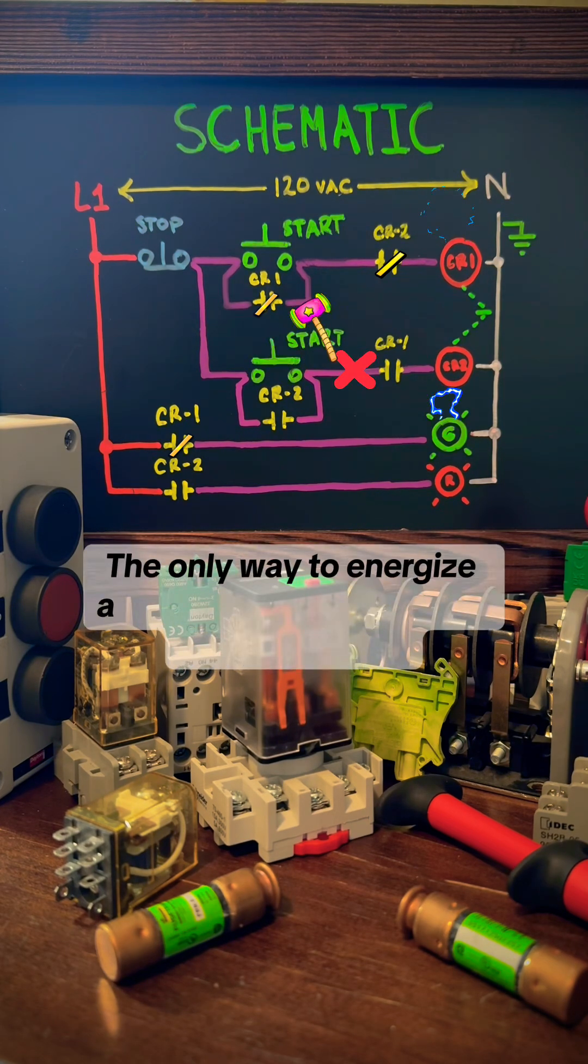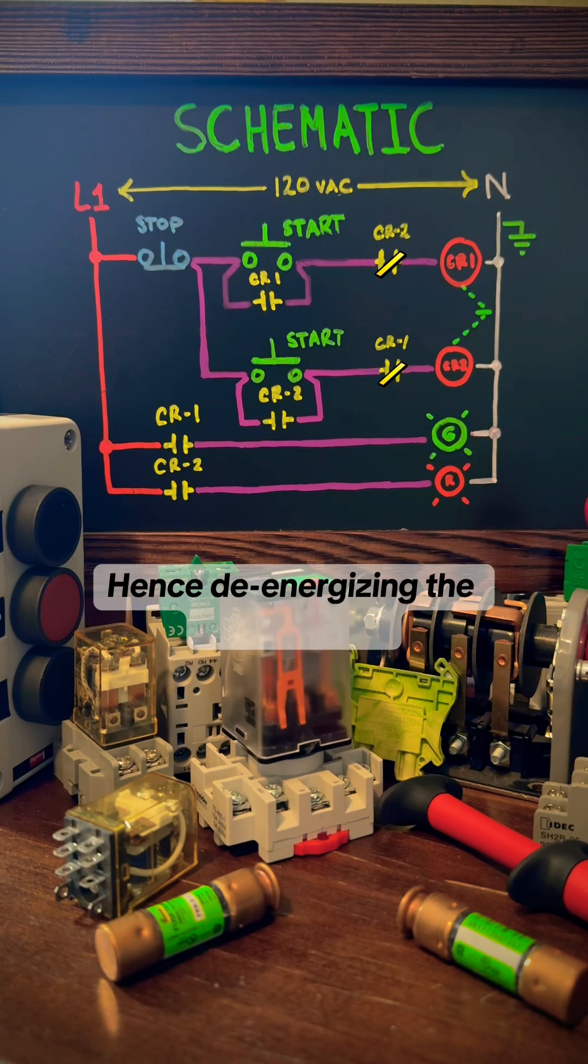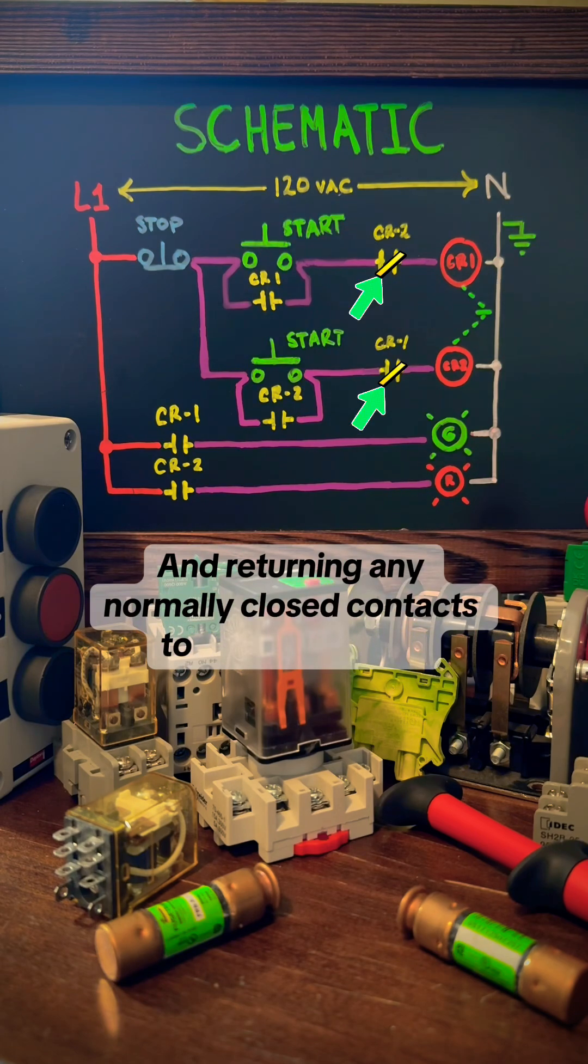The only way to energize a new load would be to hit the stop button, hence de-energizing the active relay and returning any normally closed contacts to its normal state.